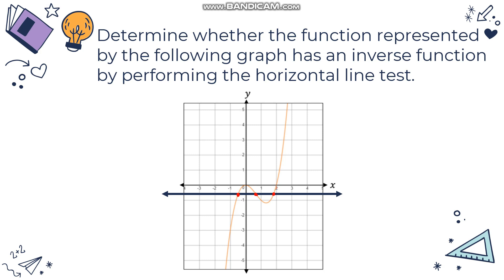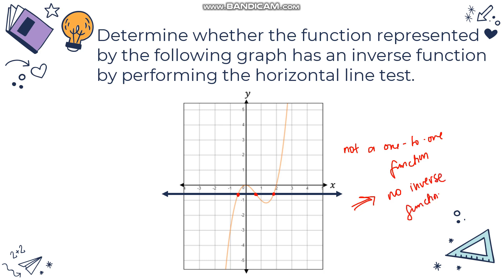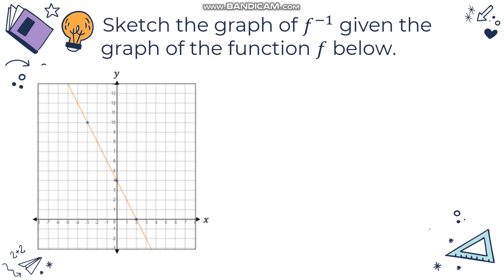The horizontal line intersects the graph at multiple points, which means the given graph is not a one-to-one function. Since it failed to satisfy the horizontal line test, this graph doesn't have an inverse function. It intersects the graph more than once, confirming it is not a one-to-one function.